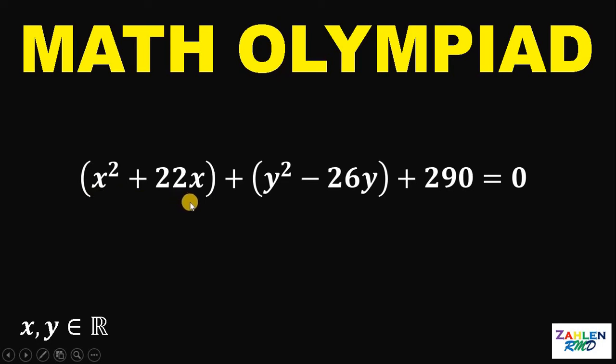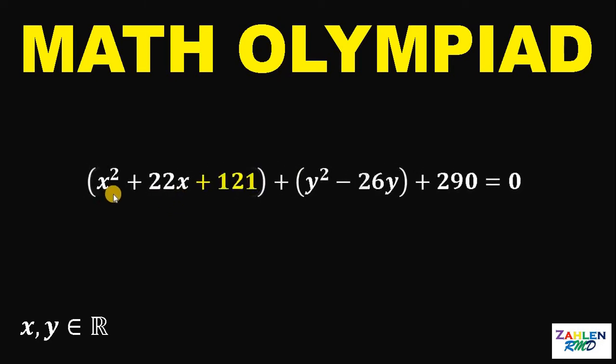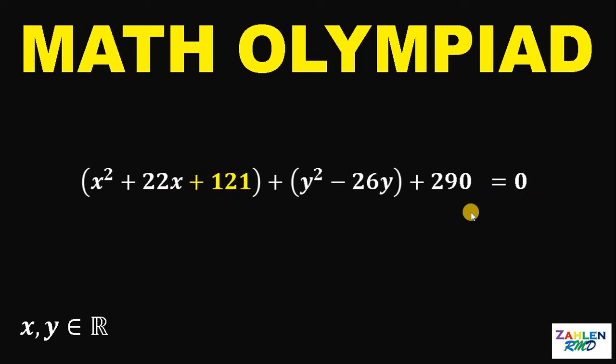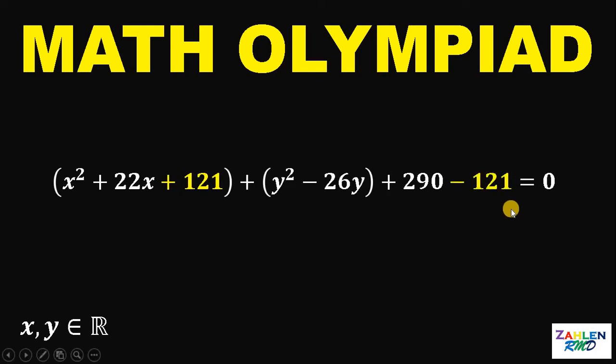So, to make this a perfect square trinomial, what we're going to do is to get 22 divided by 2 will give us 11. Then, 11 squared will give us 121. So, we need to add 121 to x squared plus 22x. Now, since we add 121 to make it balanced, we need to subtract 121.